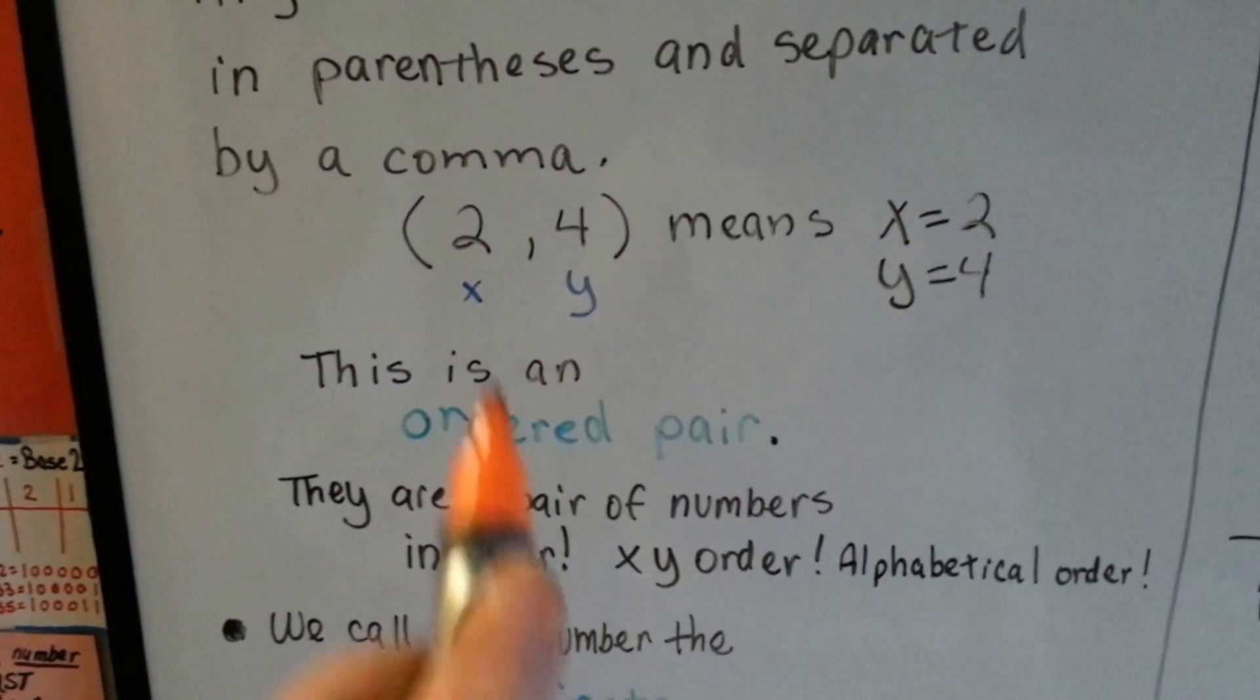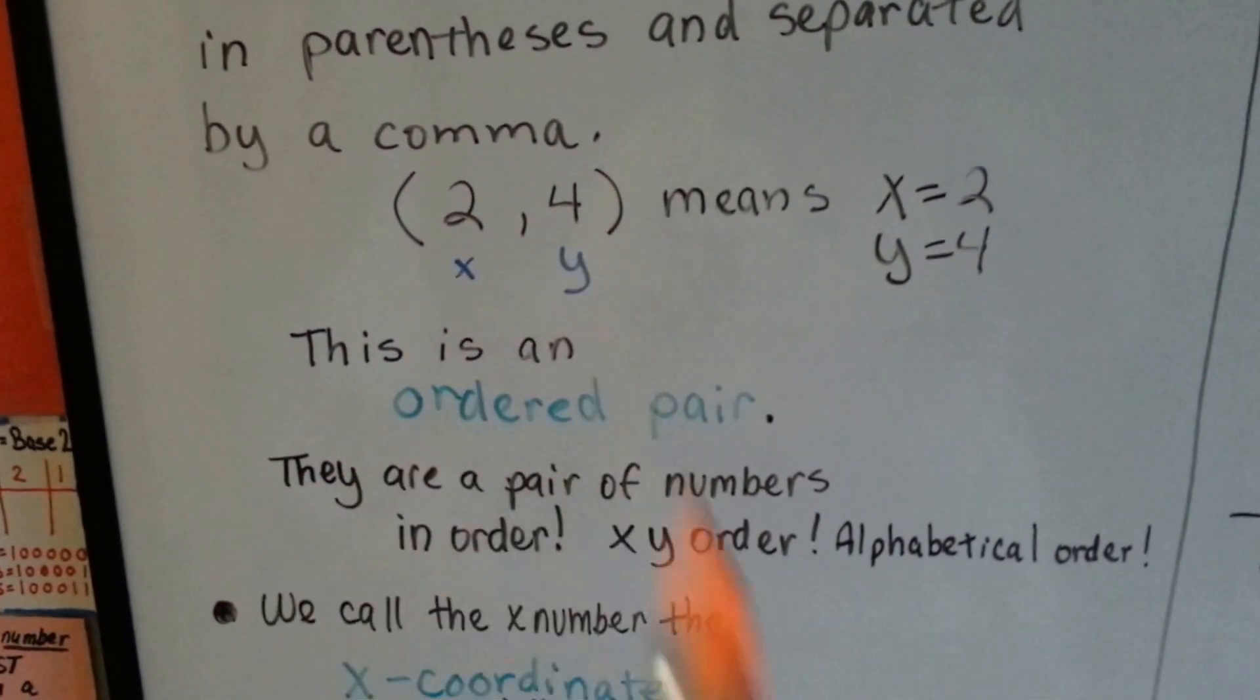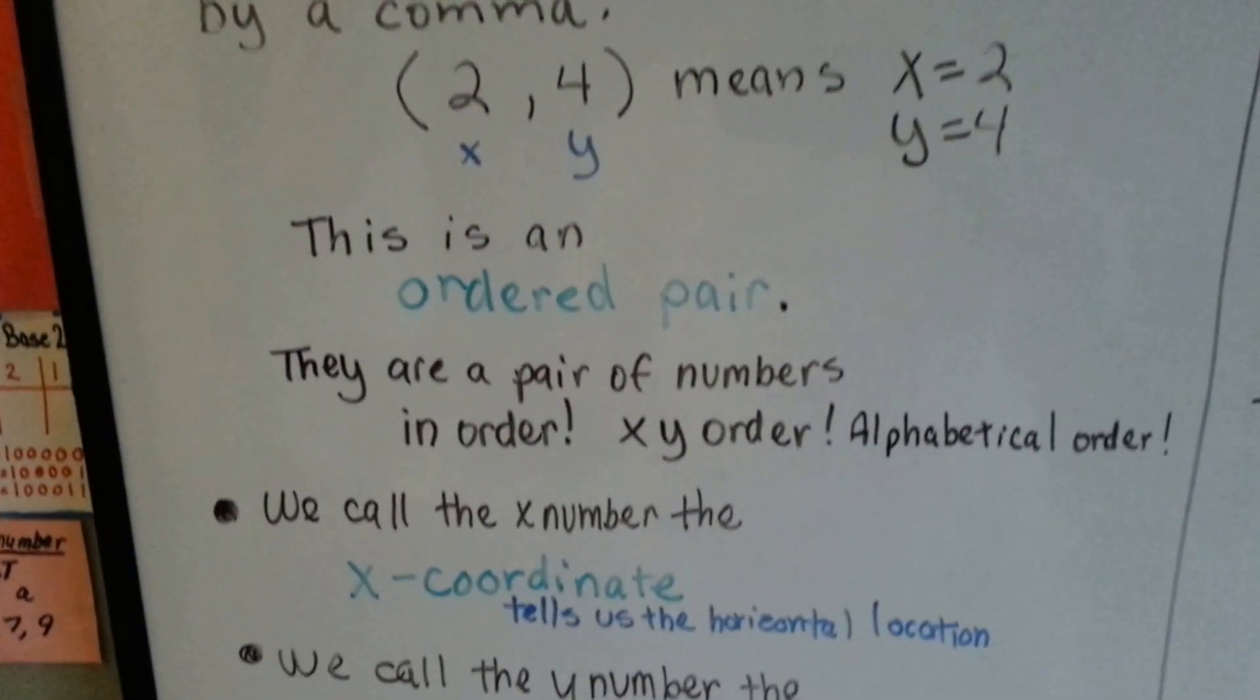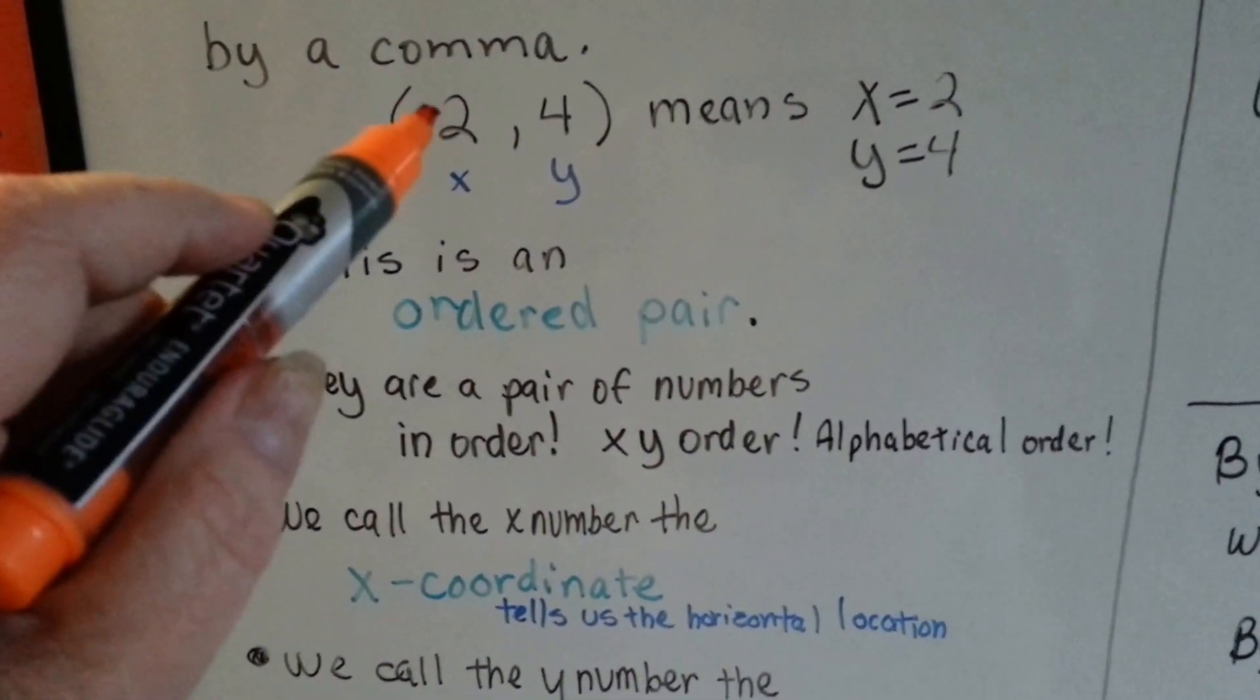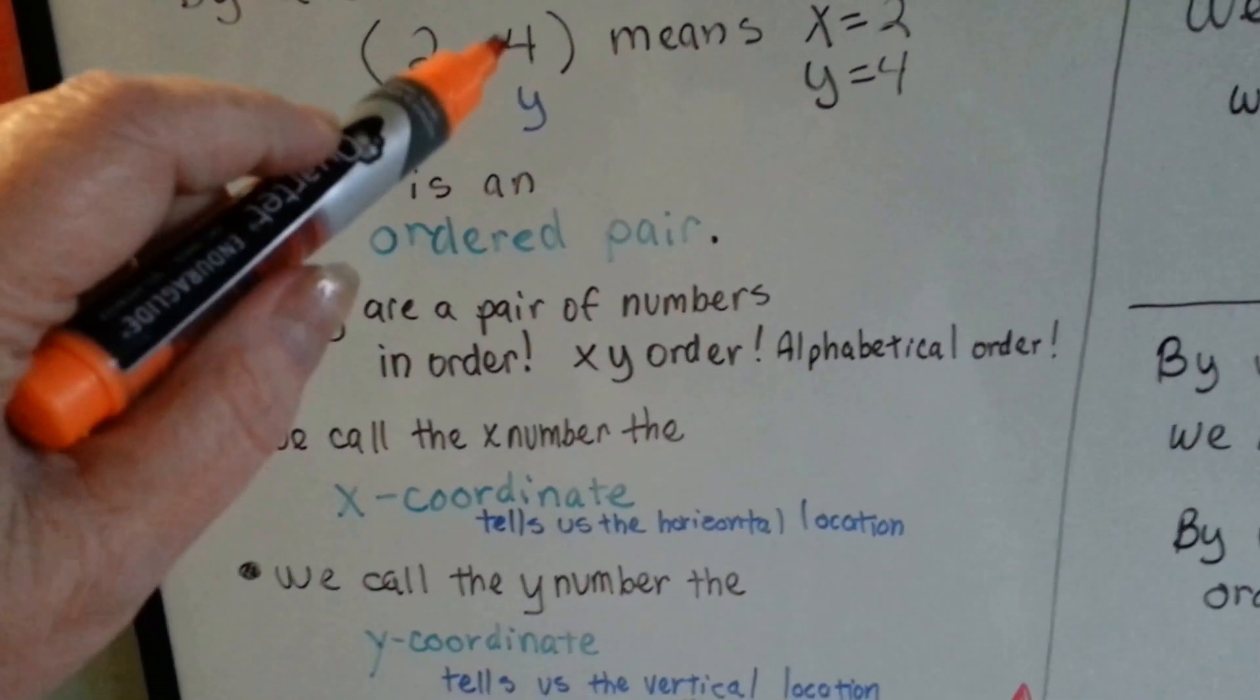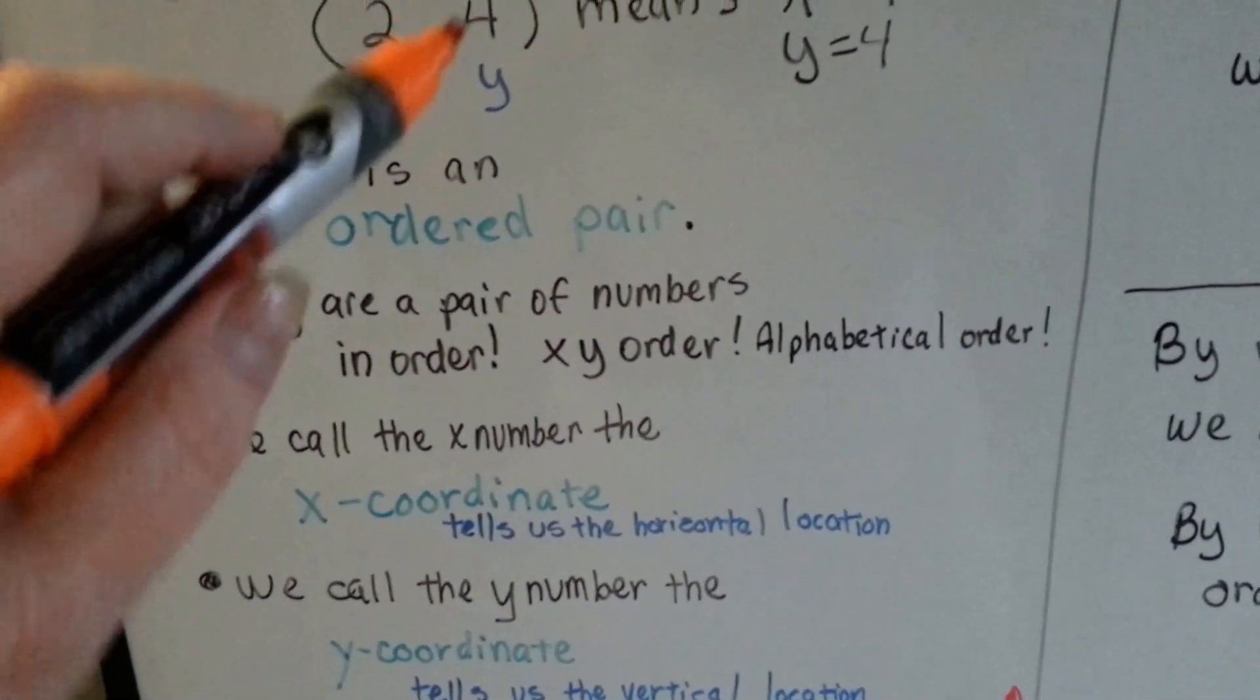They're in x-y order, which is alphabetical order, to help you remember it. We call the x number the x-coordinate. It tells us the horizontal location. And this number is the y-coordinate. It tells us the vertical location.